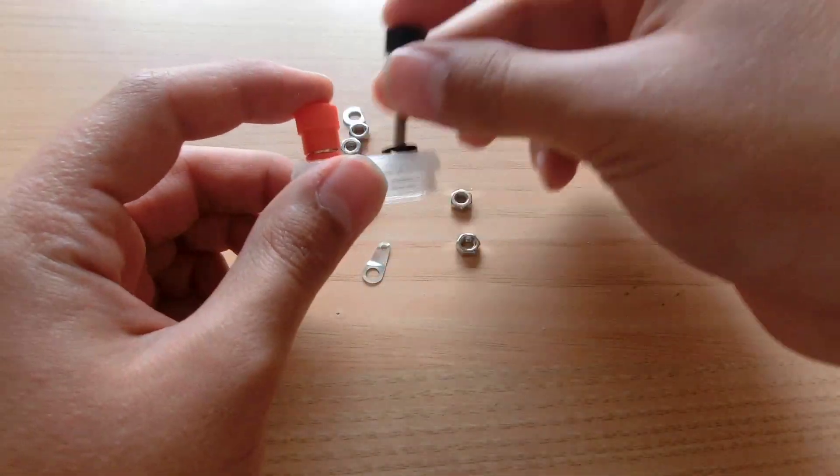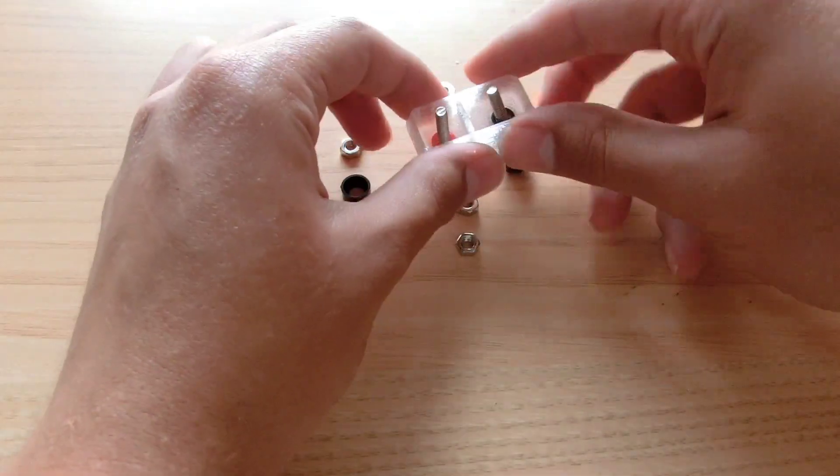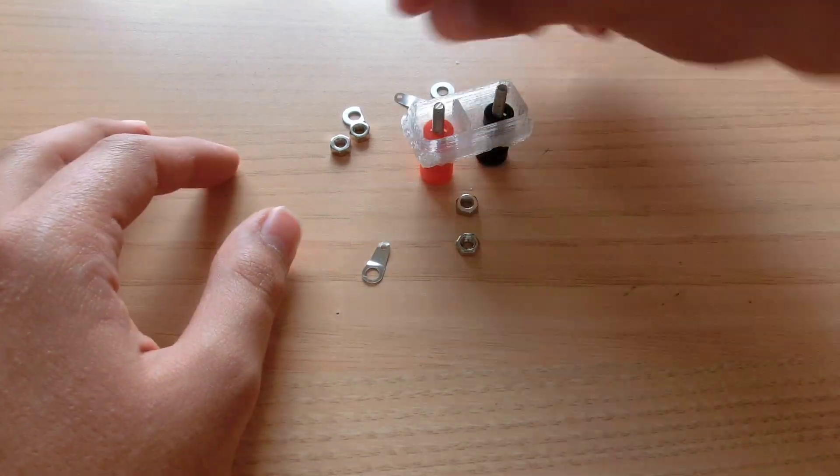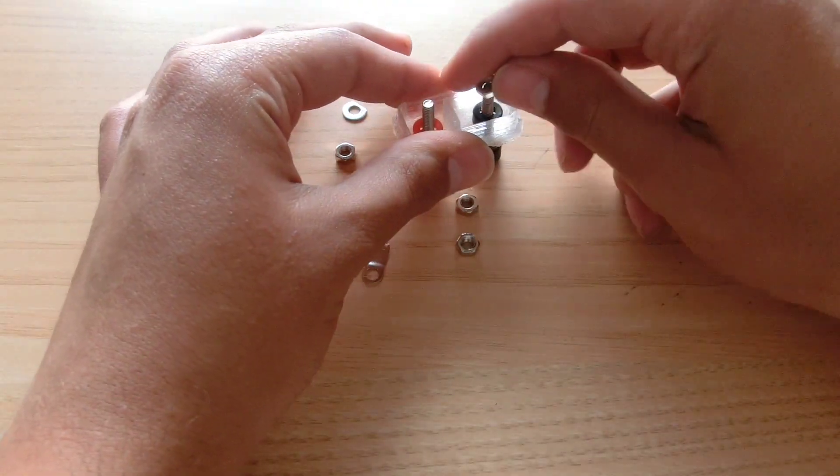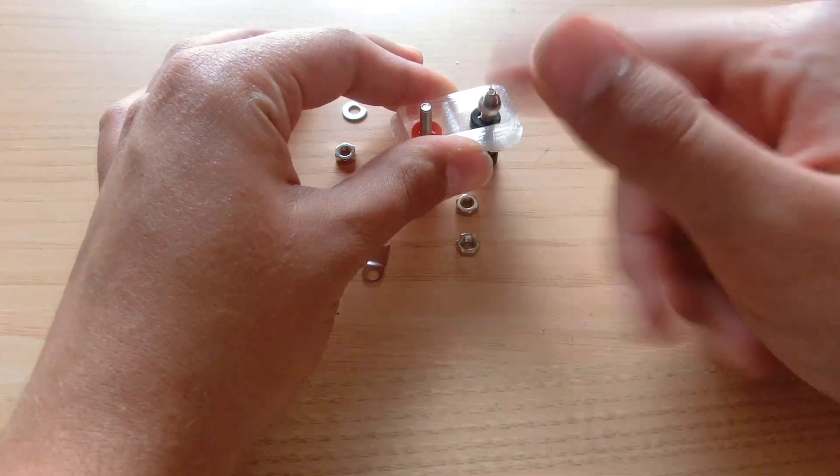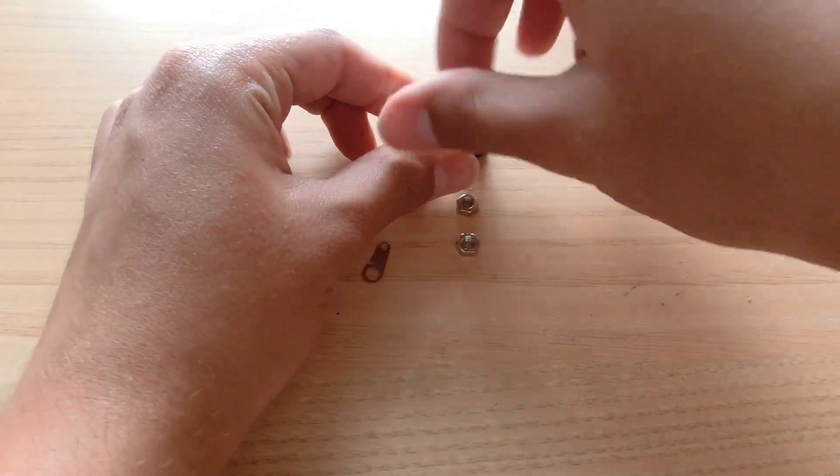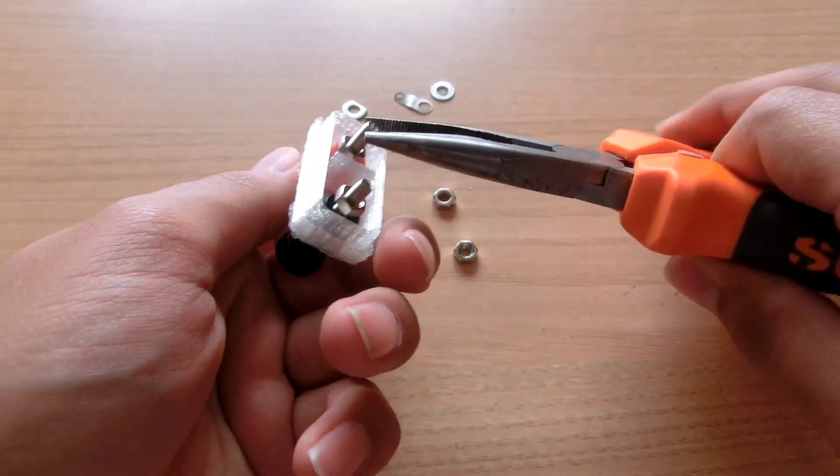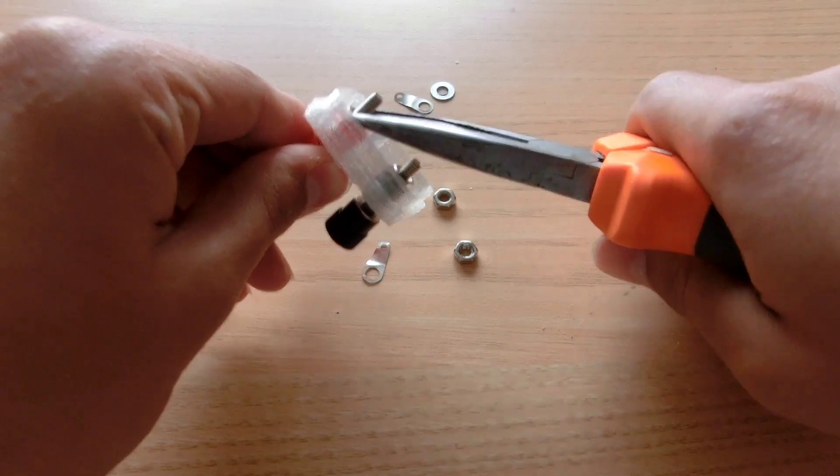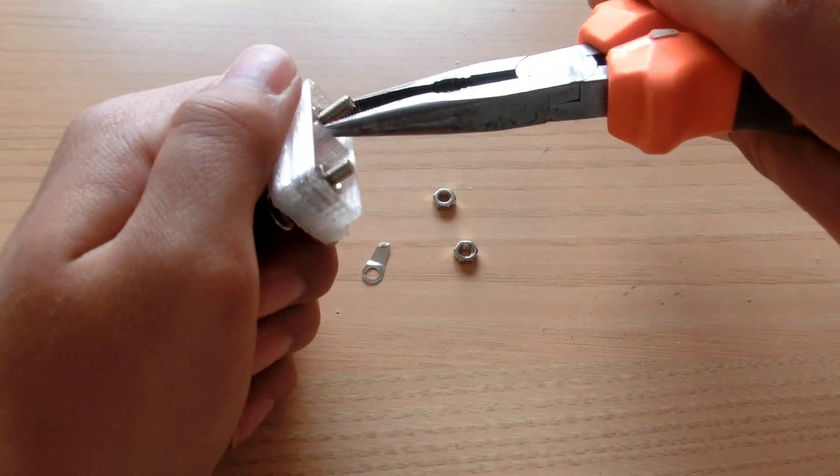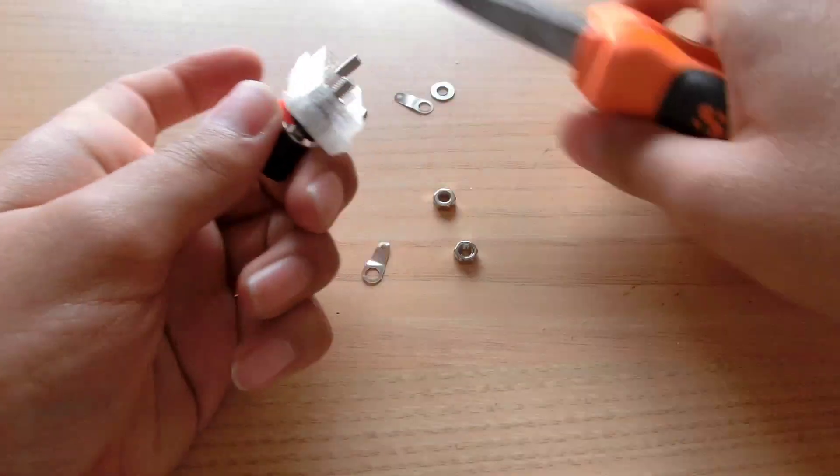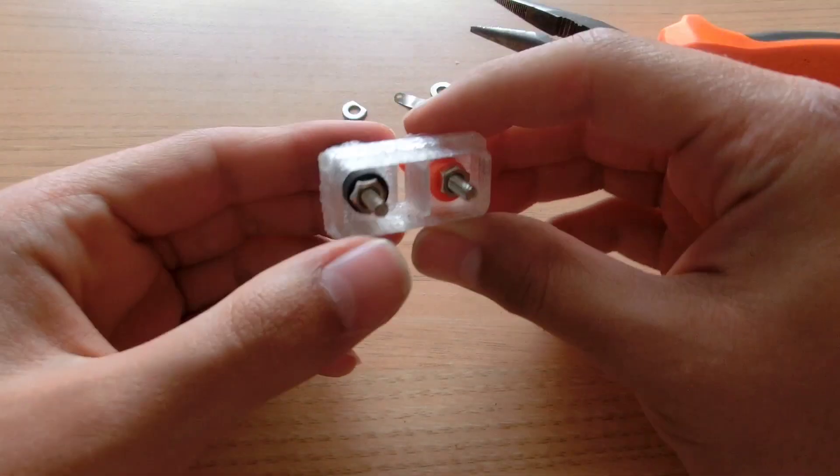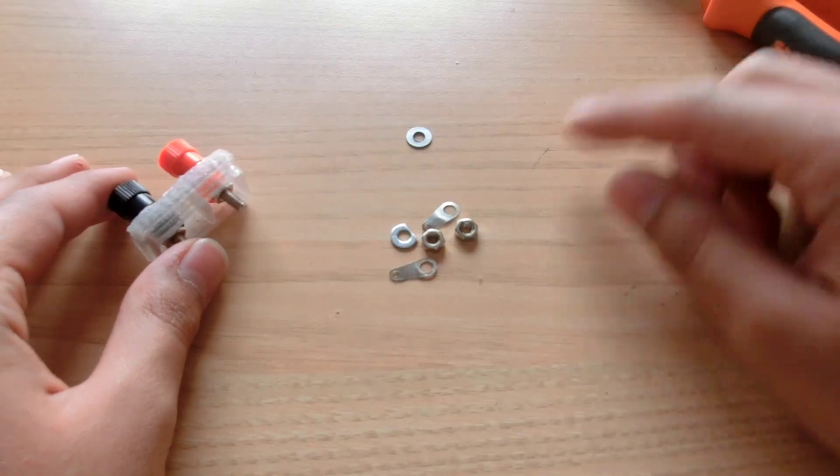Now insert the two jacks in the holes and then add the two plastic washers on the other side. Now secure the whole assembly using a pair of nuts. Tighten the nuts using a pair of pliers. Set these parts aside as we will be needing them later.